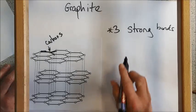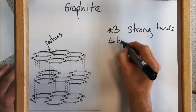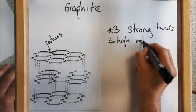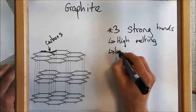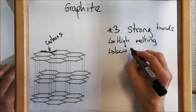Now, in terms of its properties, it's still got a high melting point, but it is lower than that of diamond because it has fewer strong bonds holding it in place.